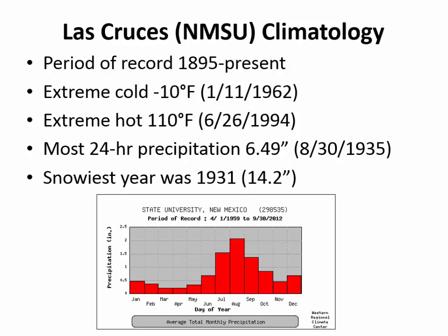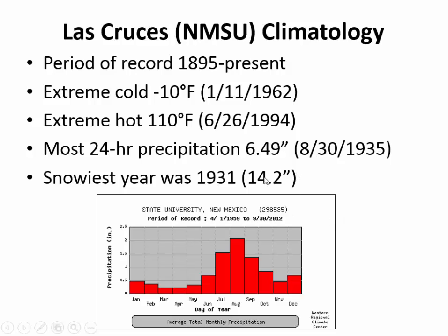We've looked at statistics like: what's the coldest temperature ever recorded? That was minus 10 degrees, back in 1962 on January 11th. What about the hottest temperature? That was 110 degrees on June 26th of 1994. How much rain fell? The most rain in Las Cruces in one day was 6.49 inches, back on August 30th of 1935. And what was the snowiest year? In 1931, we had 14.2 inches.